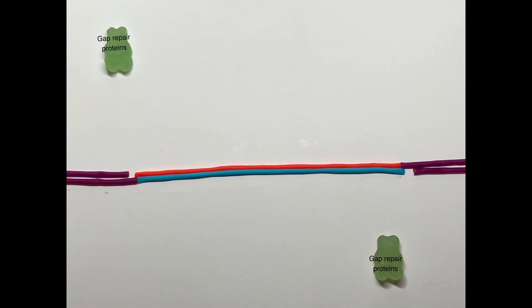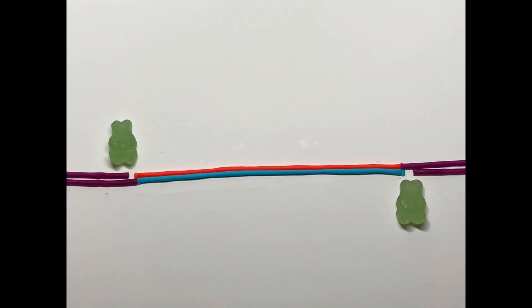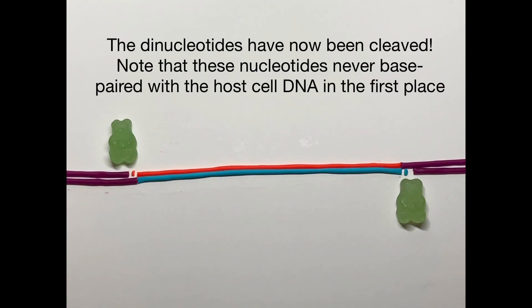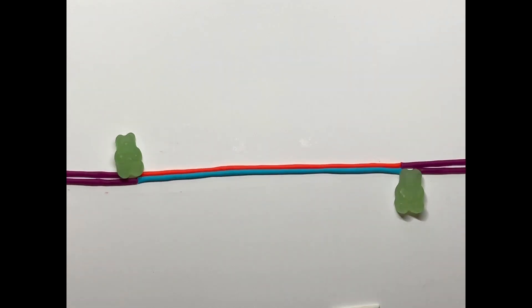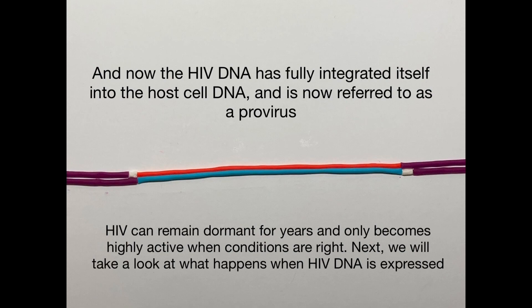There are now gaps at the 5' ends of the HIV DNA, so gap repair proteins from the host cell fill these in via gap repair synthesis. First, 2 nucleotides at the ends of the 5' HIV DNA are cleaved off — these dinucleotides never base-paired with the host DNA in the first place. Now that the HIV genome has fully integrated into the host cell, it is referred to as a provirus. HIV can remain dormant for years and only becomes highly active under the right conditions.